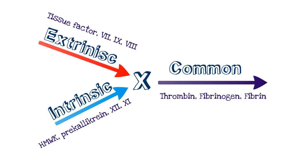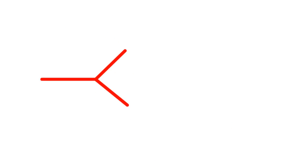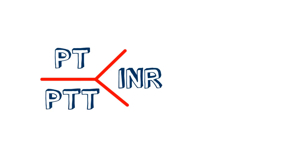As a result of these different pathways — extrinsic, intrinsic, and finally the common pathway — we have developed laboratory tests that can identify each portion of the pathway. These tests include: number one, your PT; number two, your INR; and number three, your PTT.